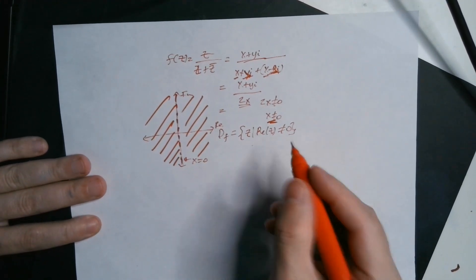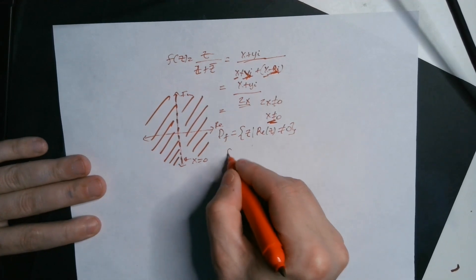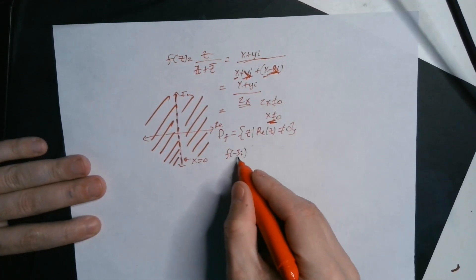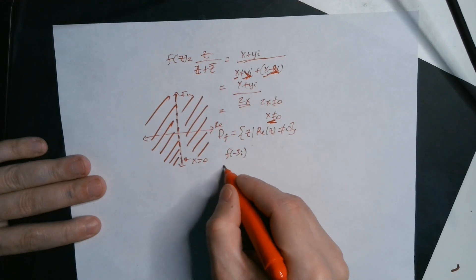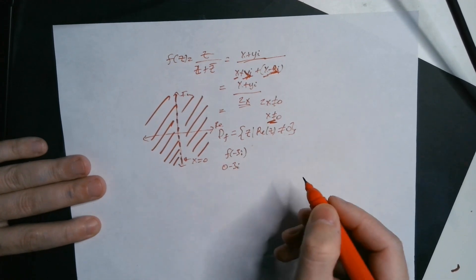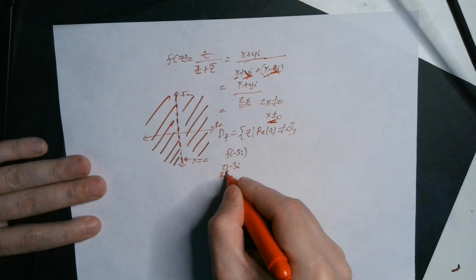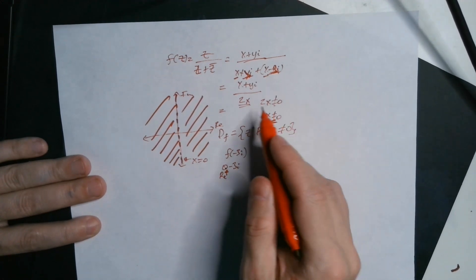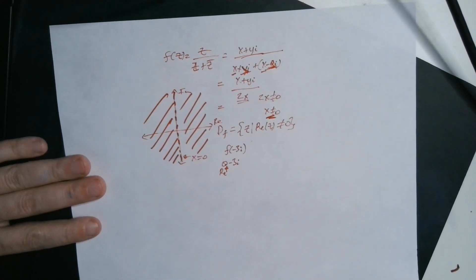If you try an example, if you did f of negative 3i, you'll see this because for negative 3i, it really means zero minus 3i, right? This is the real part here. So when you plug this in, you'll end up with division by zero on the bottom, which is not allowed.